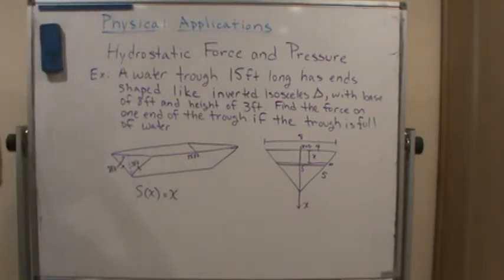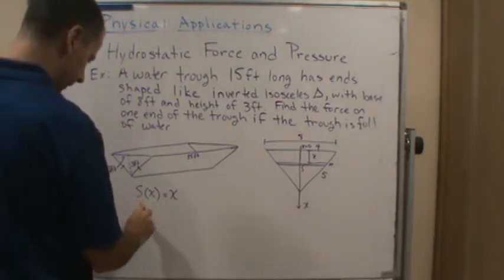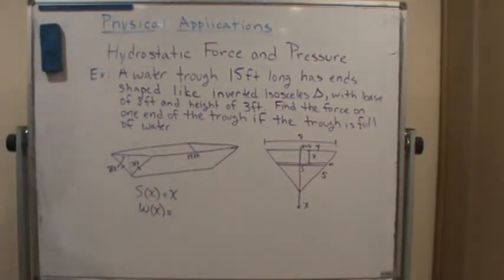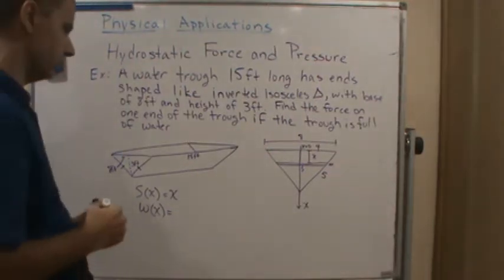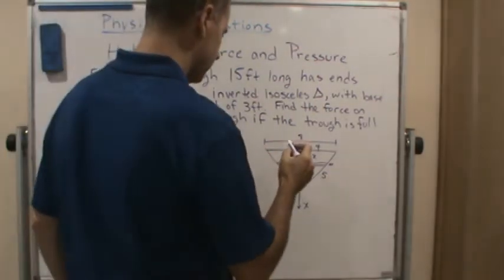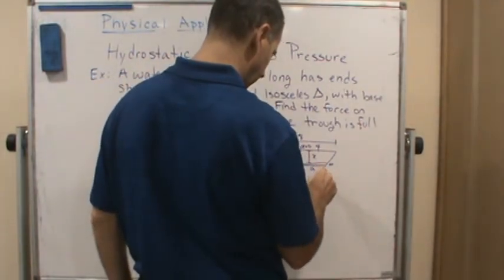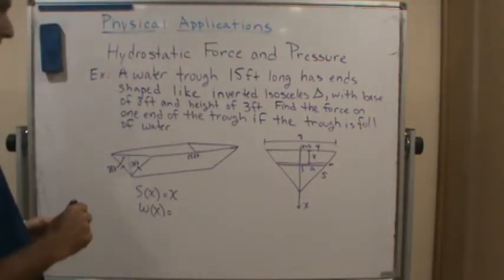So let's do that. s of x, well that's just going to equal x. Now what about w of x? Okay, so the width, how can we relate the width to x? Well, let's call this a and let's use similar triangles.